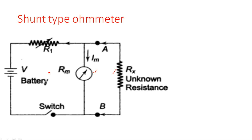Here we have a battery supply V and a resistor R1. In the previous case we had two resistors R1 and R2, but here we have only one resistor R1, and that is a variable resistor. Additionally, we have also connected a switch. What is the purpose of the switch?